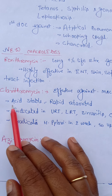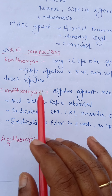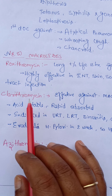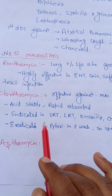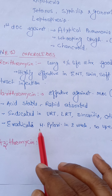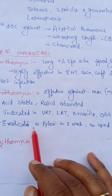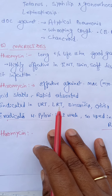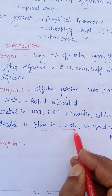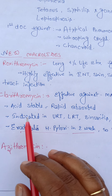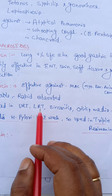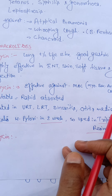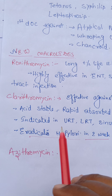Clarithromycin is acid stable, whereas erythromycin is acid labile. That's why clarithromycin is included in the triple regimen to eradicate H. pylori infection. When given, it eradicates H. pylori infection within 2 weeks. It is also indicated in upper respiratory tract infection, lower respiratory tract infection, sinusitis, and otitis media.